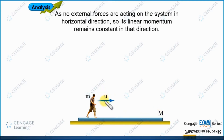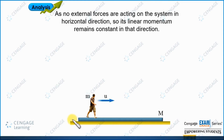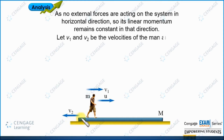The velocity U is given with respect to the plank, meaning this is the velocity of the man with respect to the plank. For conservation of linear momentum, we need the velocities with respect to the ground. Let us assume v1 is the velocity of the man with respect to ground in the rightward direction. Because of the recoil of the plank, the plank will move in the leftward direction, so we assume the velocity of the plank with respect to ground is v2 in the leftward direction.